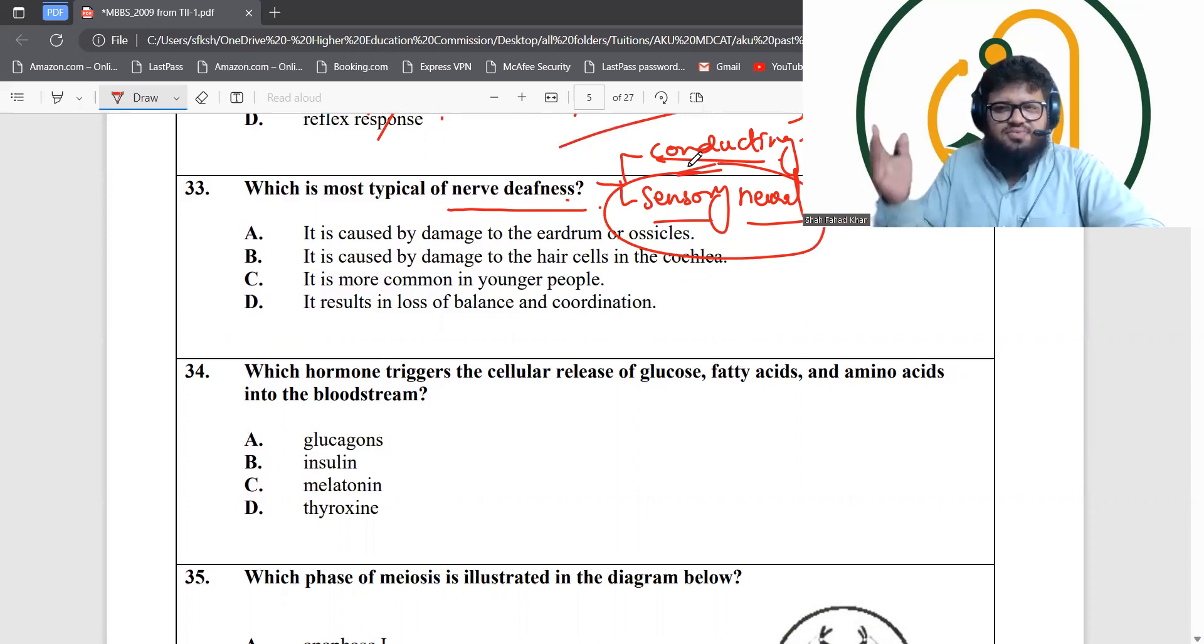After the auditory ossicles it's the sensory neural part that comes in. Tympanic membrane, auditory ossicles - malleus, incus, stapes - are part of the conducting system. That's not a part of nerve deafness. Damage caused to the eardrum is not a nerve deafness, that's a conductive deafness because eardrum is the tympanic membrane.